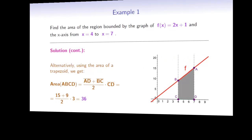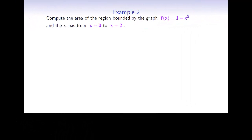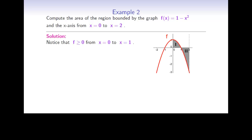Now let's move on to another example. Compute the area of the region bounded by the graph of f(x) equals 1 minus x squared and the x-axis, from x equals 0 to x equals 2. Here, the function f is positive from 0 to 1, and negative from 1 to 2. So we will have to split the region into two different parts, and find the area of each part separately.